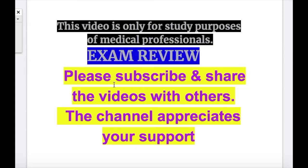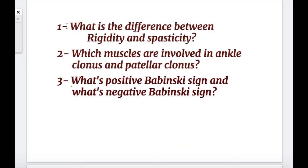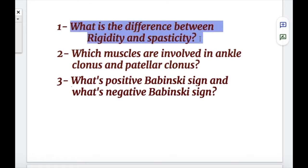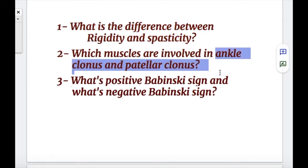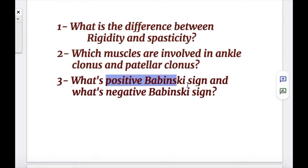In this video, we will do an exam review of hypertonia caused by upper motor neuron lesions. We'll discuss different types of hypertonia and compare spasticity and rigidity. A few important exam questions before we start: Question one, what's the difference between rigidity and spasticity? Question two, which muscles are involved in ankle clonus and patellar clonus? And question three, what's positive Babinski and what's negative Babinski sign?